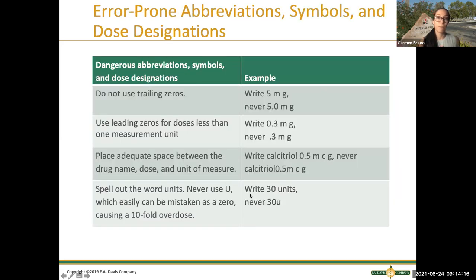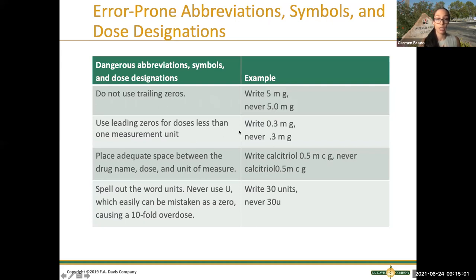Here we have a list of the most error-prone abbreviations that you could use when documenting or writing things down. You need to memorize these because these abbreviations can lead into dangerous results for the patient. Do not use trailing zeros. For example, if you have five milligrams, you are never supposed to put 5.0, because if they don't see the decimal point, it can easily go from five to 50 — that could be a big issue, especially with medications that have very small dosages because they're really strong.